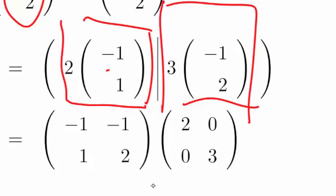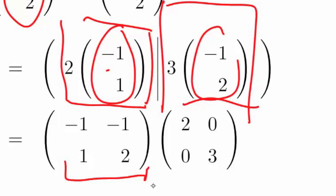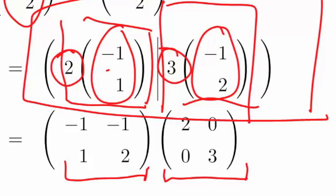Notice that multiplying this matrix right here that consists of this column and that column on the right by a diagonal matrix that has these entries on its diagonal, that is the same as this matrix right here. Why? Because multiplying on the right by a diagonal matrix means you scale the columns.